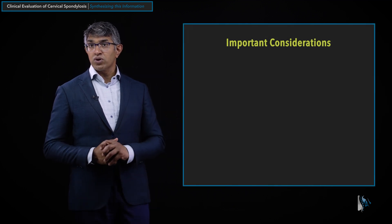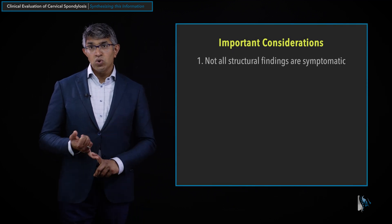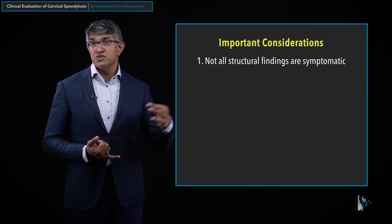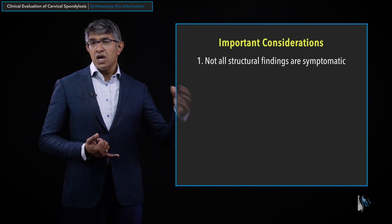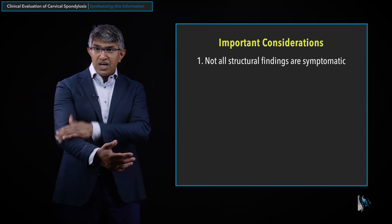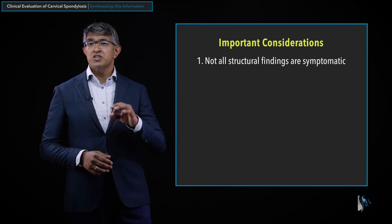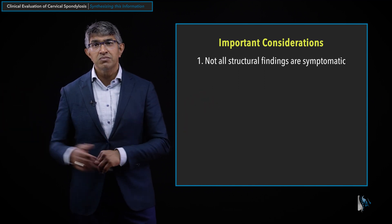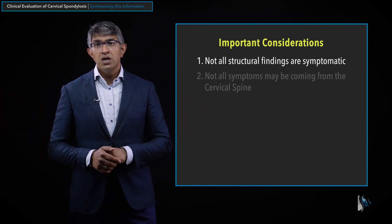There are a few important considerations. Number one: not all structural findings cause symptoms. We often see patients with imaging findings showing pressure on the nerve on one side causing symptoms, while pressure on the other side produces no symptoms at all. Just because somebody has a problem on their MRI doesn't mean that's what's causing their symptoms.